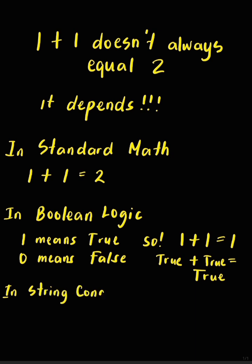So depending on whether you're doing math, logic, or text operations, one plus one can surprisingly be two, one, or eleven. A fun reminder that even the simplest equations can have multiple meanings.